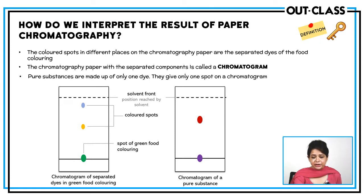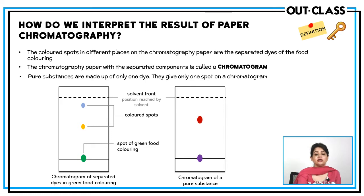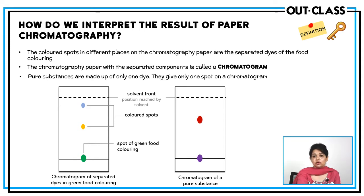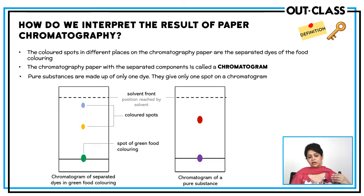This paper with the separated components is known as the chromatogram. An important point: we allow the solvent to run on the paper, but we remove the chromatogram from the tank when the solvent reaches near the upper end — we never allow the solvent to overrun the paper. We must remove it before that because we need to calculate the distance travelled by the solvent and the distance travelled by the solute to find the RF value.